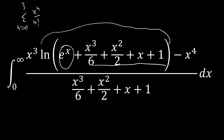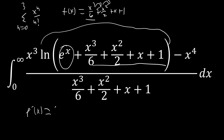So this is actually a partial sum of e to the x, which means that this function — which I'm going to call f(x) — has properties similar to e to the x. When we take f'(x), the first term is the only one that disappears because everything else differentiates down into the next term. So f'(x) is going to equal f(x) minus x cubed over 6. And that's a property we're going to use.